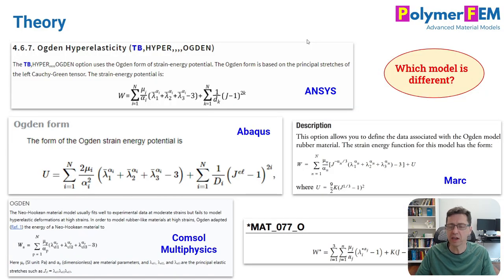The first one is that there are different kinds of the Ogden model. If you look carefully at these screenshots that I took from these different finite element manuals, you can see that Abacus is the one that's different. It has a square on the alpha term here which the other ones don't have.